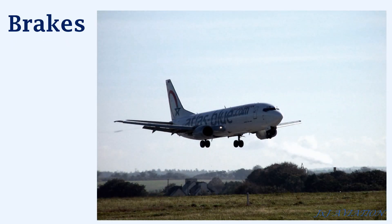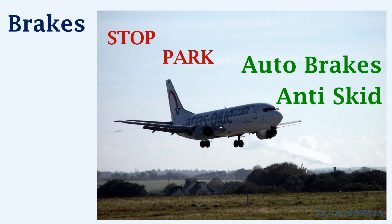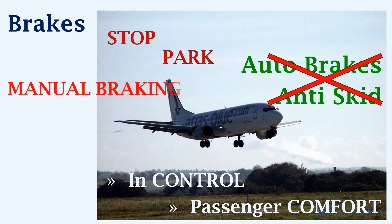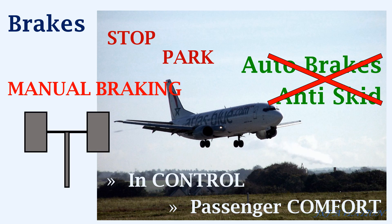On an aircraft, the brakes are used to stop or to park the aircraft. There may be additional features installed such as auto brakes and anti-skid, which assist the pilot to keep the aircraft in control and to improve passenger comfort. In case of failure of these functions, manual braking is always available through the rudder pedals, but care must be taken to prevent an aircraft skid.